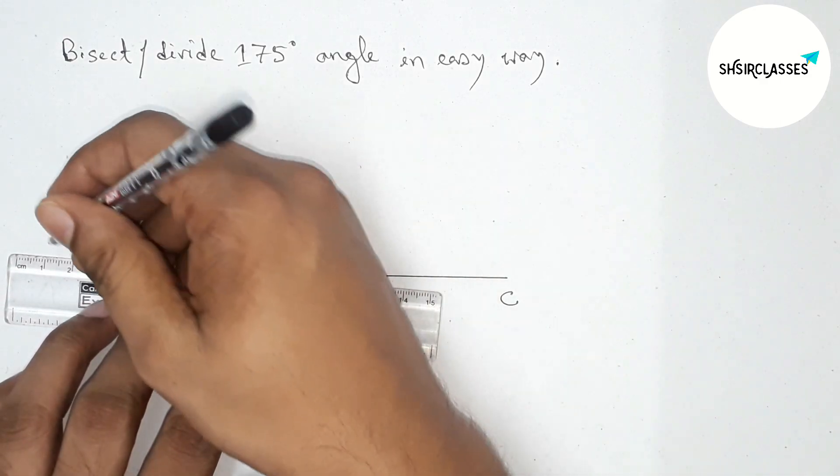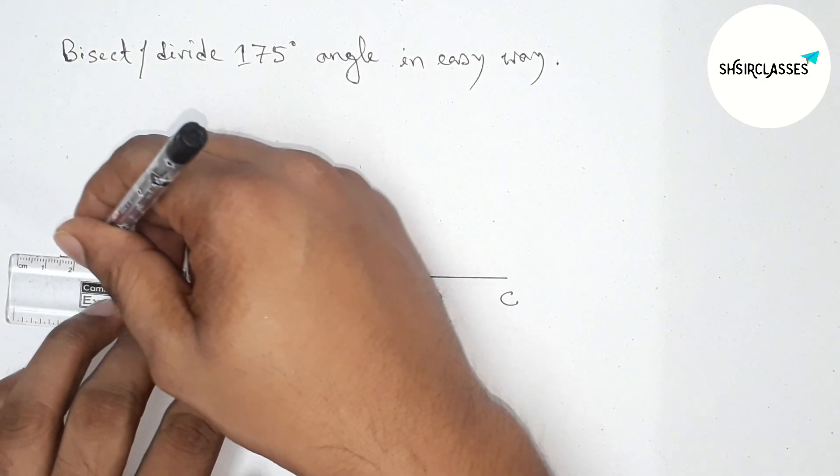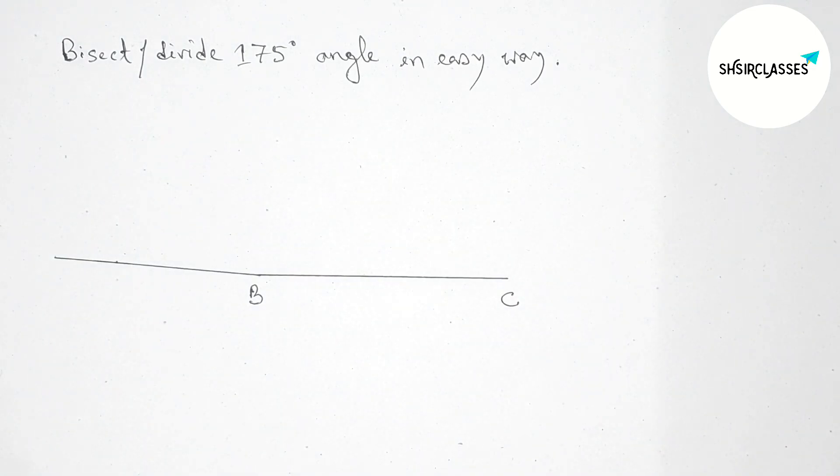Okay, so next joining this line to get here 175 degree angle. So now taking point here A, angle ABC, this is 175 degree.